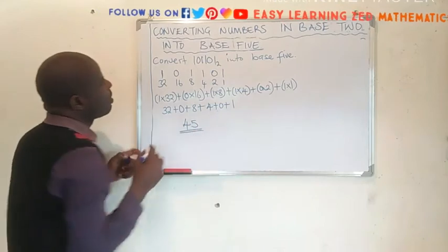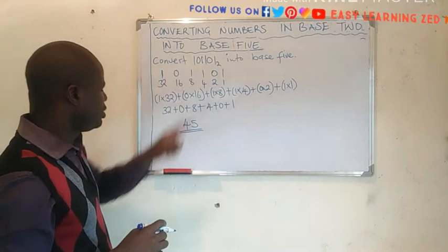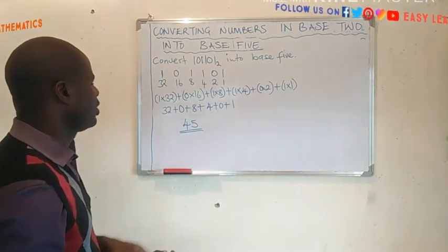So I say, this one is 32, 40, 44, 45. So that is 45. So 101101 base 2 is equal to 45 in base 10.